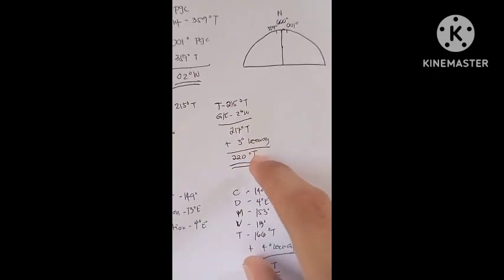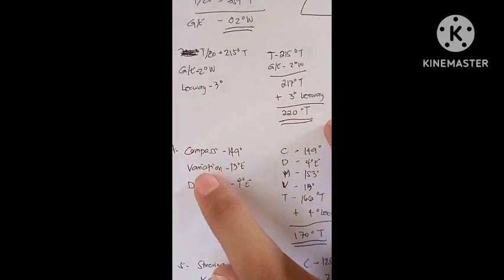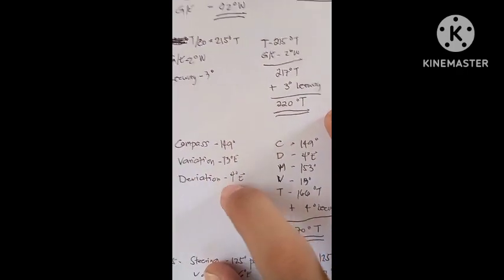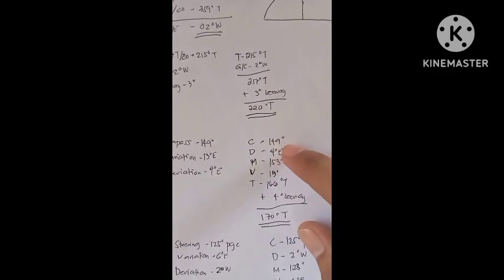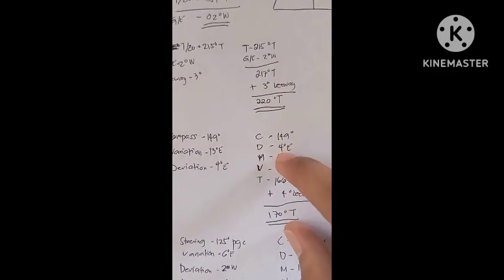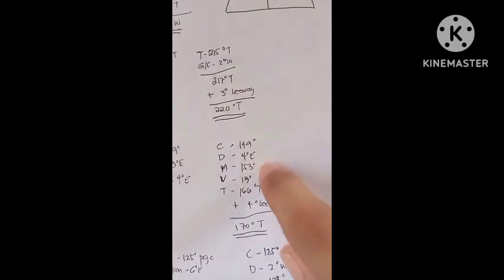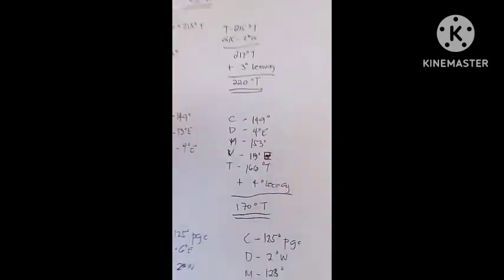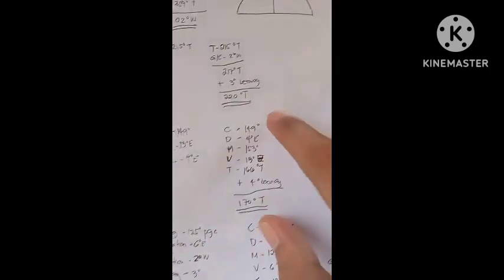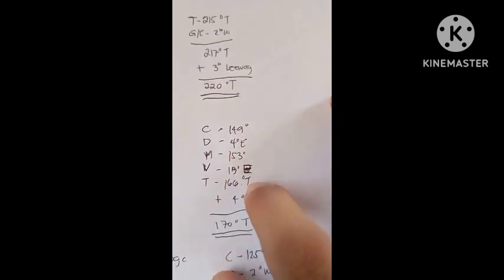Number four: we have a given compass course of 149 degrees, variation of 13 degrees east, and deviation of 4 degrees east. We're going to use the correcting method — compass to true. For correcting, east is add and west is minus.